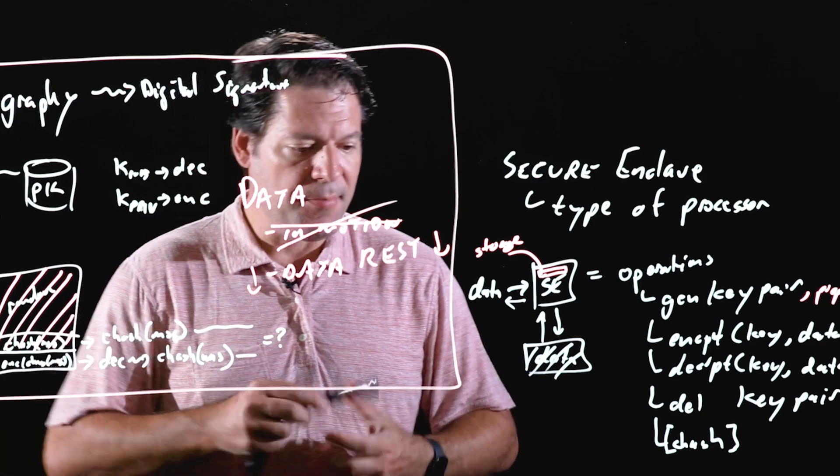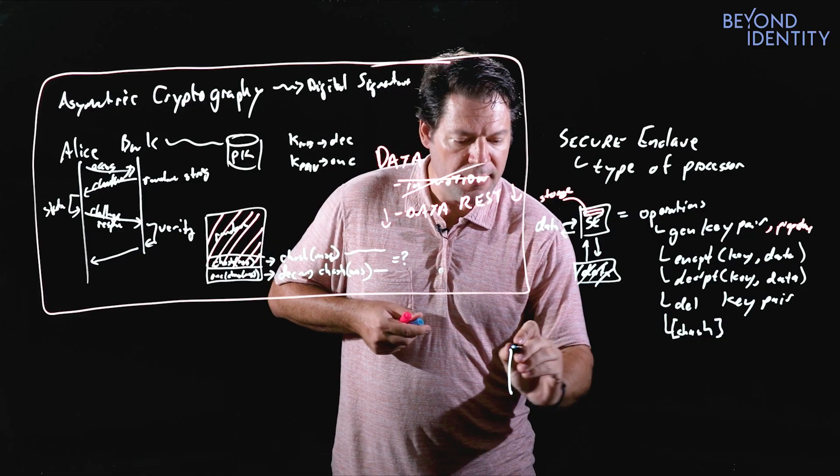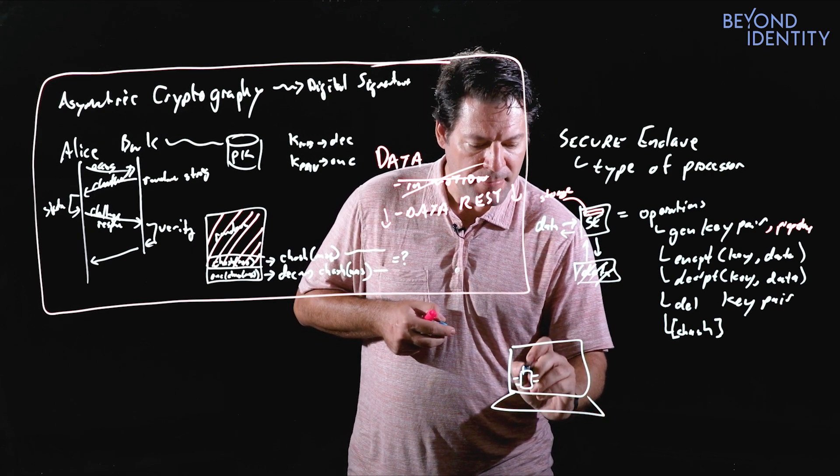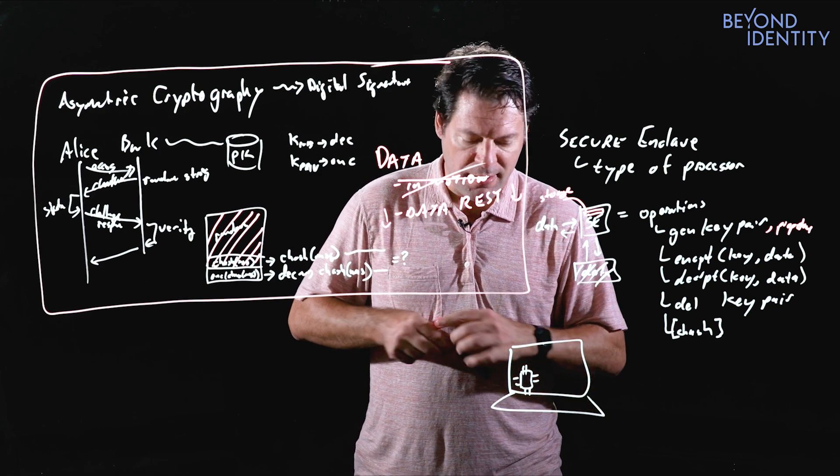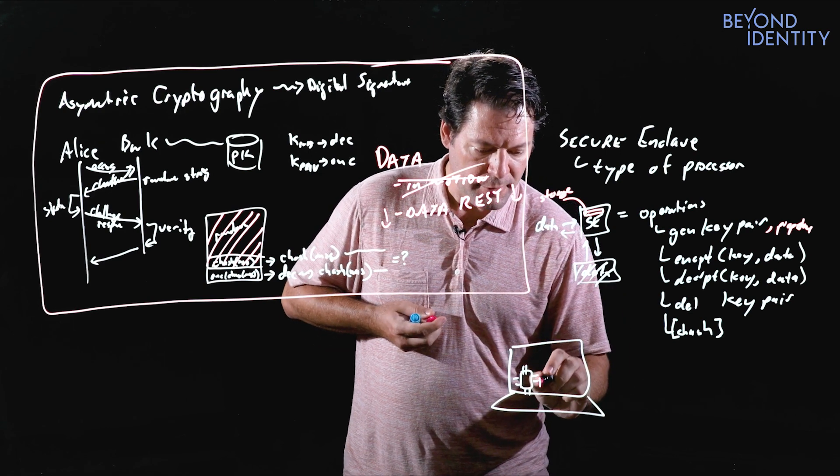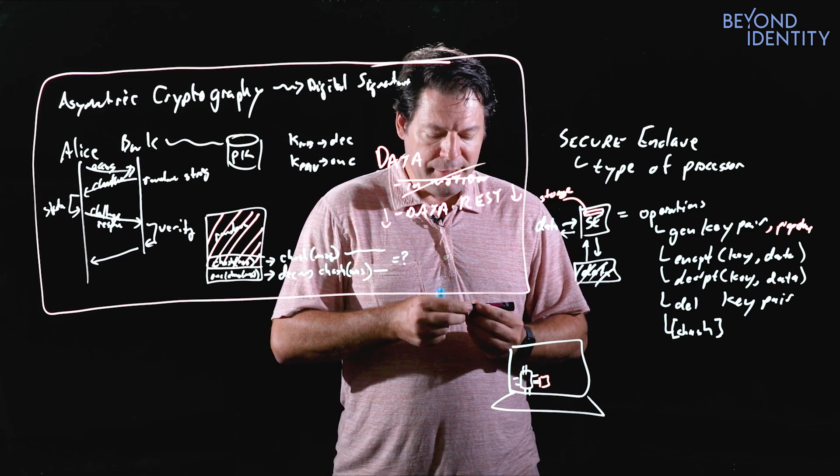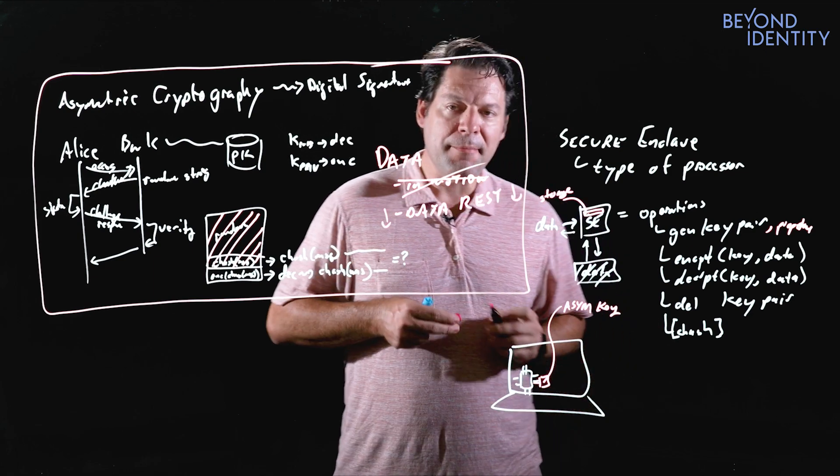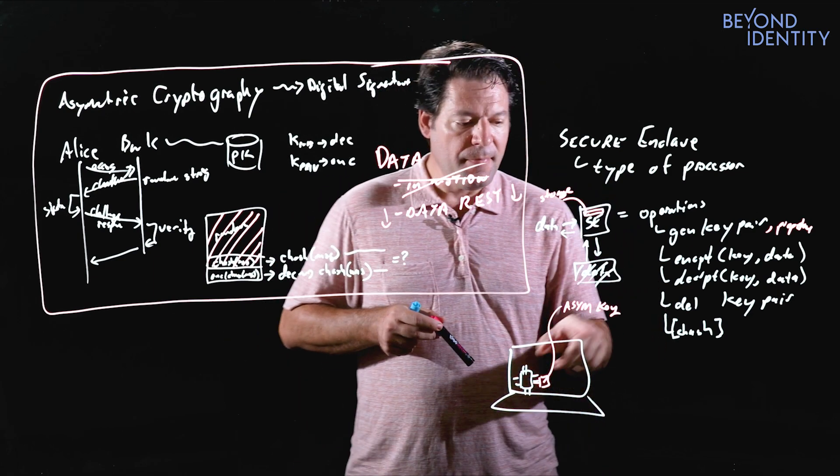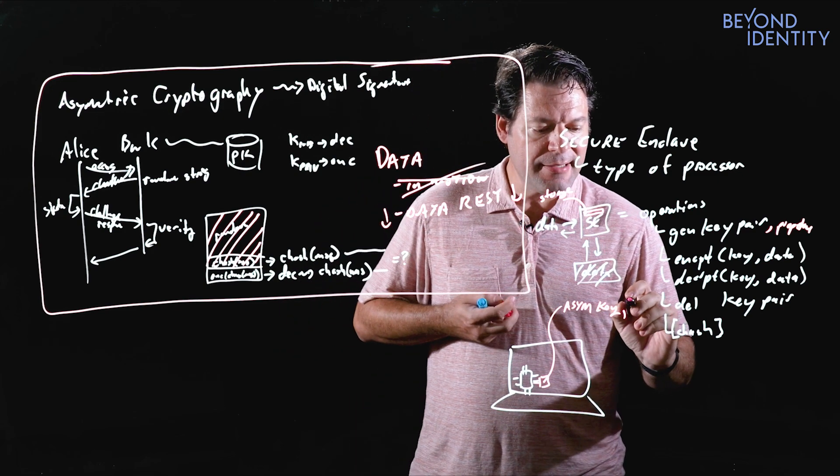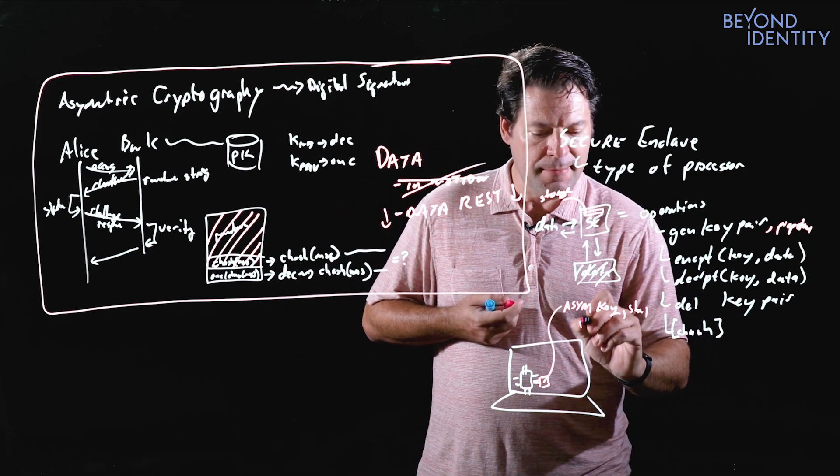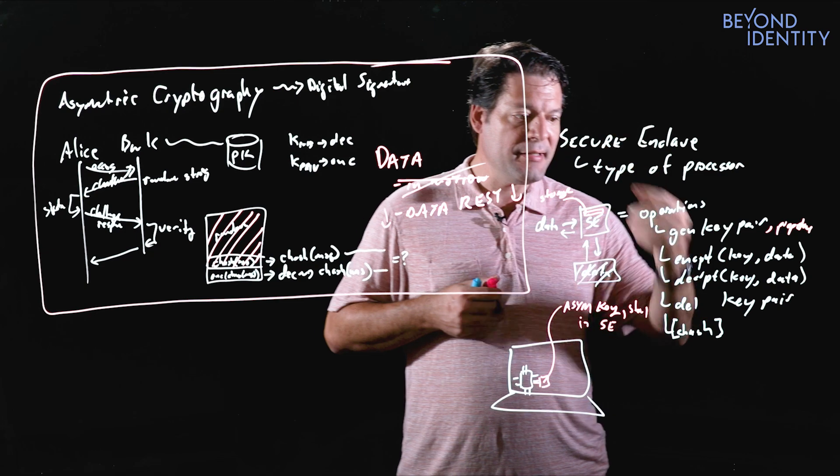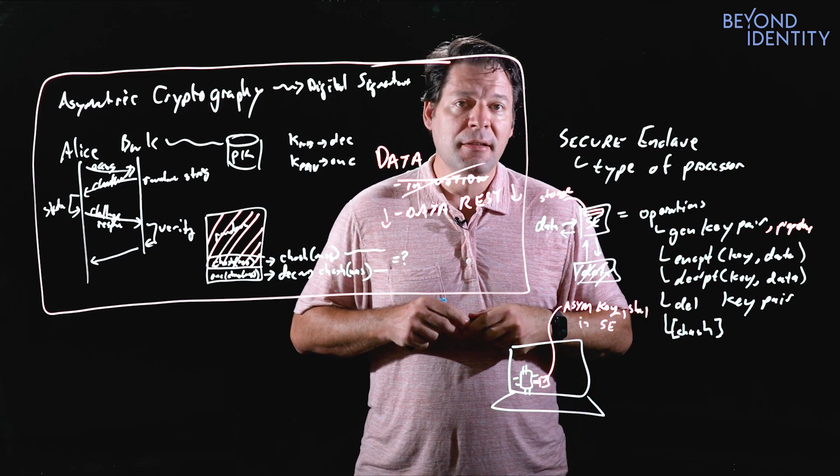So here's an interesting idea. So I have this computer, we're back to Alice's computer. And our computer's got the typical processor on it. But then let's say it also has the secure enclave on it. I could create an asymmetric key in that processor. And I could create it with the property that it has to basically stay in the secure enclave. So what that guarantees when I create it in that way is there's no way to actually copy the key out.